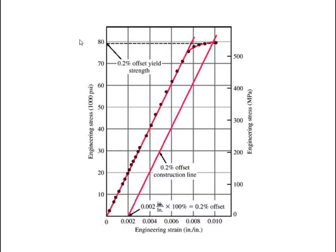In the stress-strain diagram, the vertical axis is engineering stress and the horizontal axis is engineering strain. The 0.2% offset construction line is drawn parallel to the linear elastic portion of the stress-strain curve, and this linear region represents the relationship between stress and strain in the elastic range.